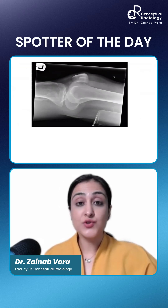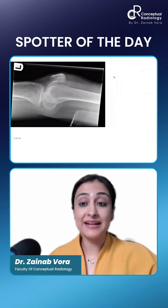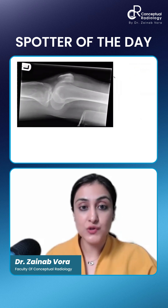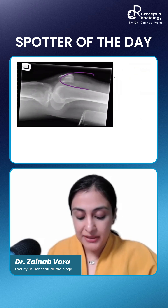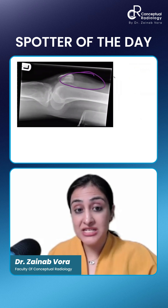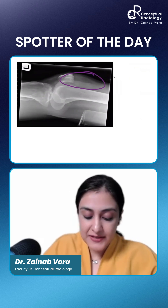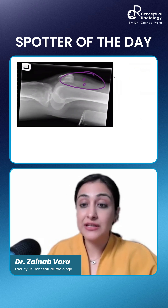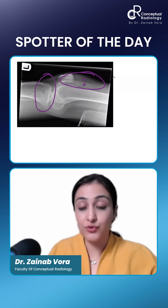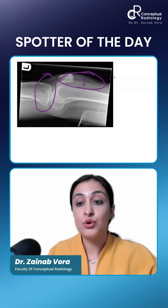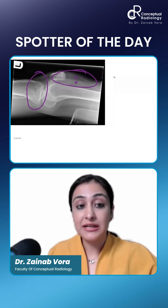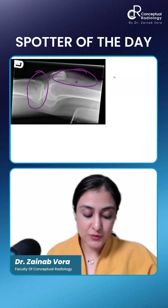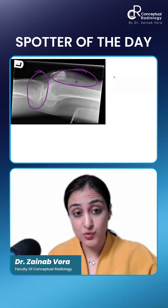So partly you are right that you are seeing lipohemarthrosis — you are seeing that there is patellar and suprapatellar fluid collection and you can see that there is a fat-fluid level. Whenever you see lipohemarthrosis, more often than not you will have a tibial plateau fracture, because there is bone marrow fat leaking out which leads to it.